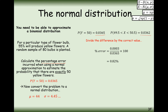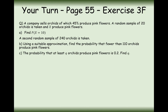To summarise that question: first work out the binomial probability, then work out the normal distribution probability — calculating mean and standard deviation first — then find the percentage difference. Now pause the video and try the next question yourself.